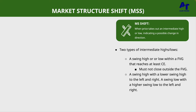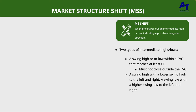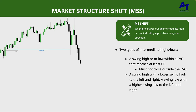The second type is a swing high that has a lower high to the left and a lower high to the right. Or vice versa — a swing low with a lower swing low to the left and a lower swing low to the right. That king swing high or king swing low is going to be your intermediate high or low.